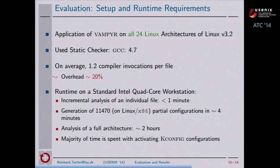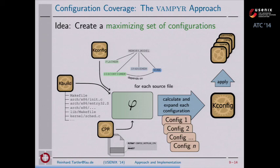Q: How stable is the Linux configuration framework? Do you have to patch Vampir every time Linux comes out with a new release? A: Vampir itself does not need to be patched that often because the approach itself is rather stable. What is pretty fragile, however, is the variability extractors from the configuration system — from kconfig and kbuild. These are indeed rather fragile. It would help our approach and many other analyses tremendously if they would provide these extractors themselves. Currently we're using reverse-engineered tools that approximate the actual variability model, and improving these extractors would tremendously improve our tool and results further.